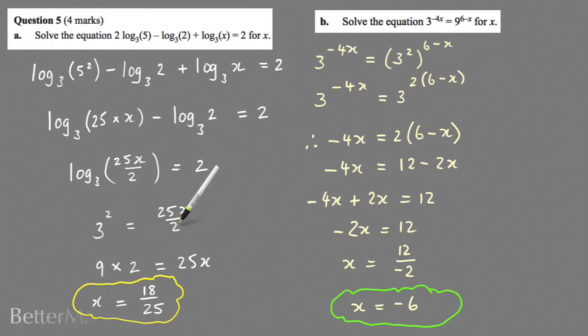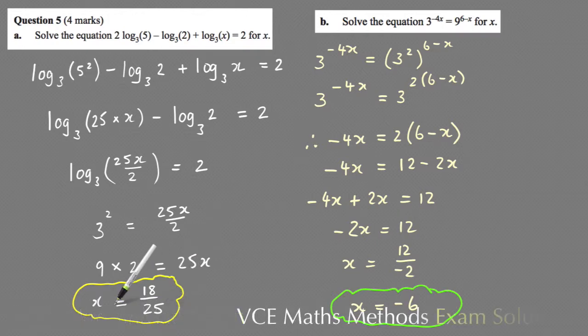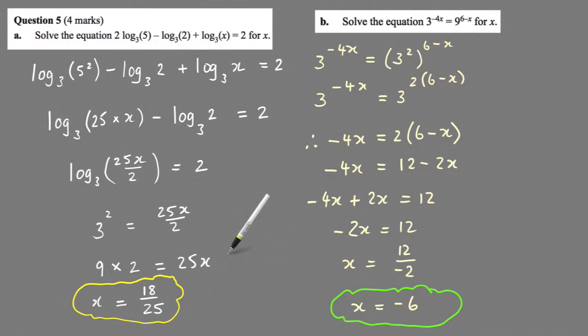9 times 2 is 18, and then divided by 25, and then that equals x. So that's how you solve that log equation, and it's all using the log laws. The biggest mistake students make is they don't know what to do and they don't try to use one of the laws.